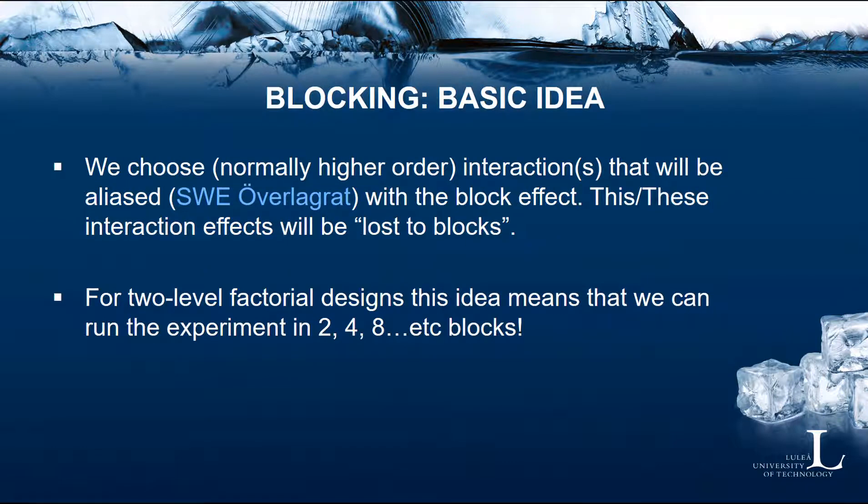The basic idea of blocking is that we first choose an interaction effect — normally a higher-order interaction — that will be aliased, or confounded, with the block effect. These interactions will be lost to blocks. For two-level factorial designs, this idea means that we can run the experiment in 2, 4, 8, 16, and so on, number of blocks.